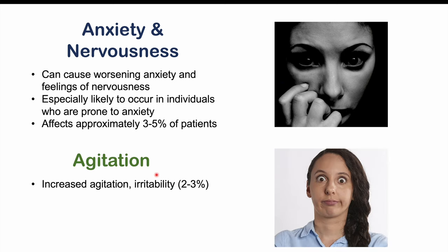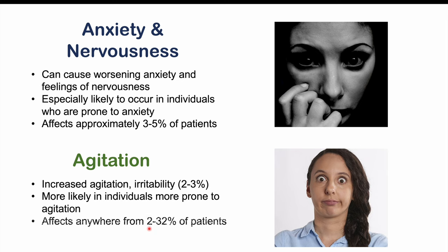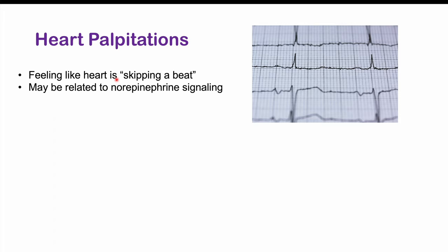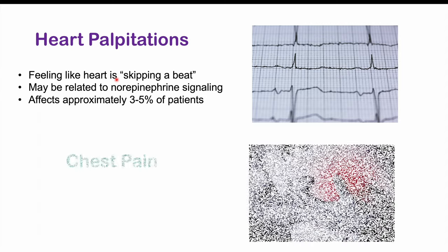Agitation and irritability can also be seen, more likely in patients who are prone to agitation. Reports are quite varied, with it affecting anywhere from two to 32 percent of patients. Heart palpitations — feeling like your heart is skipping a beat — may be related to norepinephrine signaling and affect approximately three to five percent of patients.